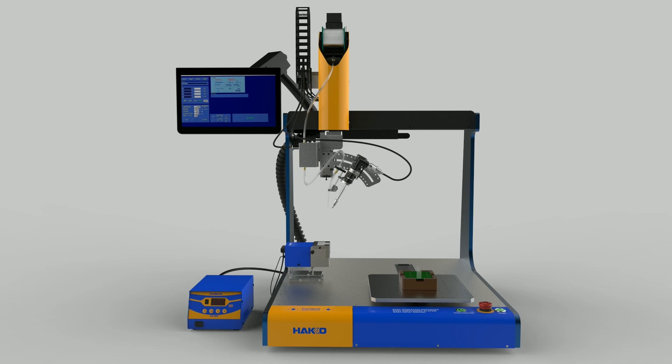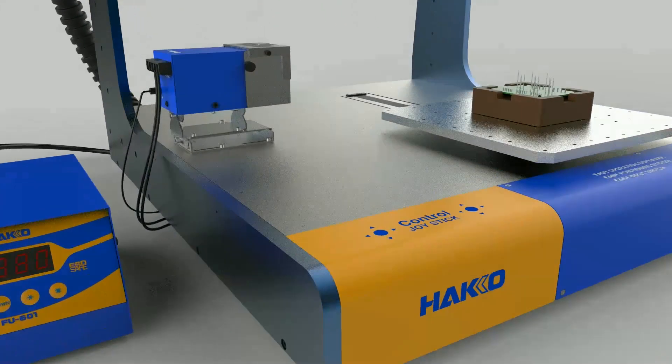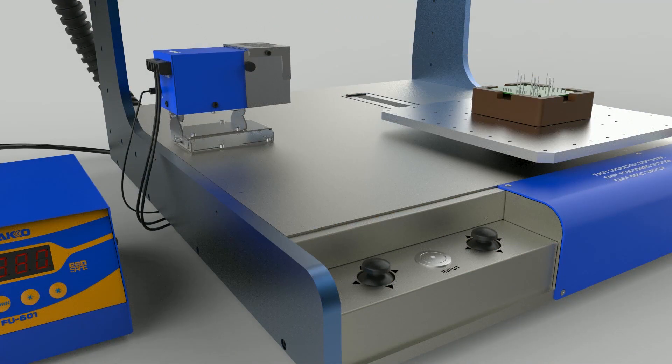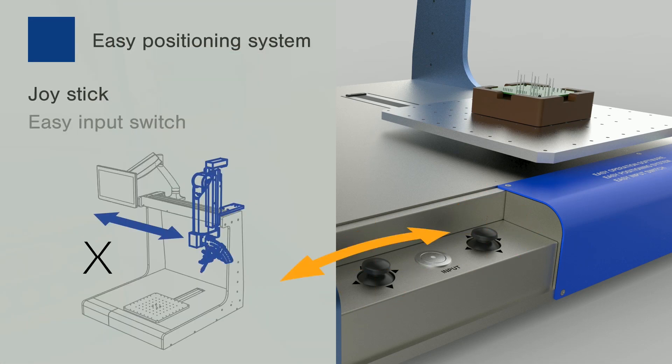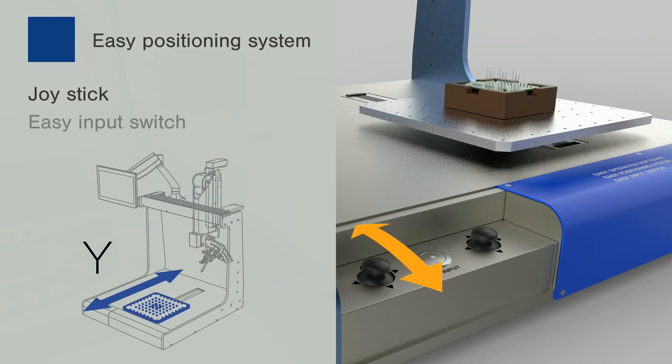Most automatic soldering robots require preparation of the teaching pendant and PC for a teaching task. However, the HU200 is equipped with the Easy Positioning System, which allows operating the robot by the joystick accessible by removing the cover from the front side of the robot.